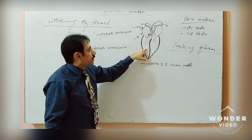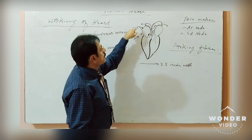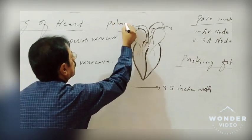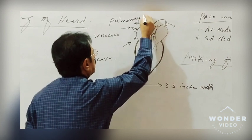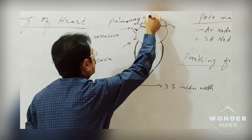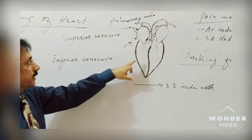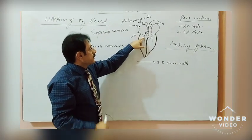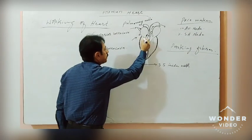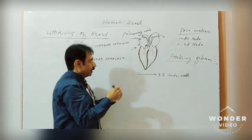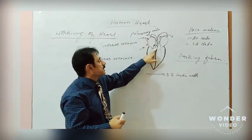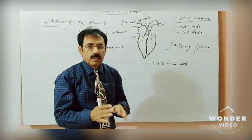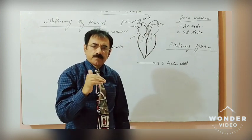The right ventricle then contracts, forcing the blood to the lungs through the pulmonary artery. When the right ventricle contracts, the tricuspid valve closes, preventing the blood from flowing back toward the right atrium, and thus the blood flows to the lungs through the pulmonary artery.